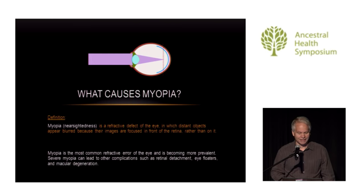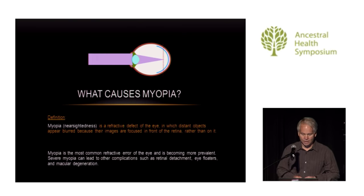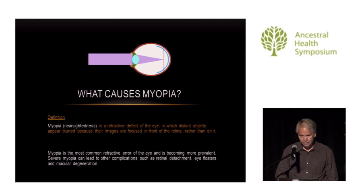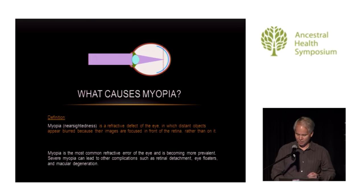What is myopia? It's colloquially nearsightedness. Biologically, it's a refractive defect of the eye where distant objects appear blurred because images are focused in front of the retina rather than on it. It's probably the most common refractive error of the eye, and it's becoming more prevalent. Severe myopia can lead to macular degeneration, cataracts, eye floaters, and retinal detachment. My talk is about myopia, but some of you are farsighted with hyperopia — the opposite condition. A lot of the principles here apply to hyperopia as well.